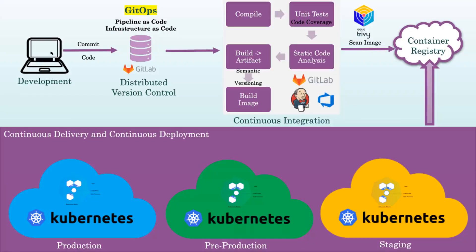With GitOps, deployment pipelines are triggered by changes made to the Git repository, and all changes are reviewed, approved, and tested before being automatically deployed to production. This helps to ensure that only validated changes are deployed, and makes it easy to revert to previous versions if necessary.